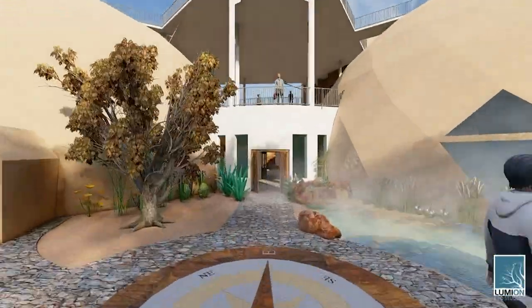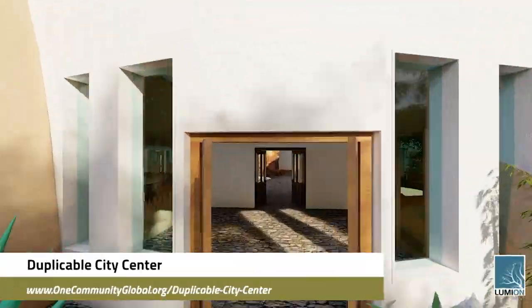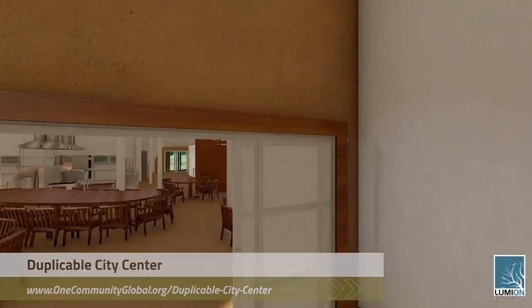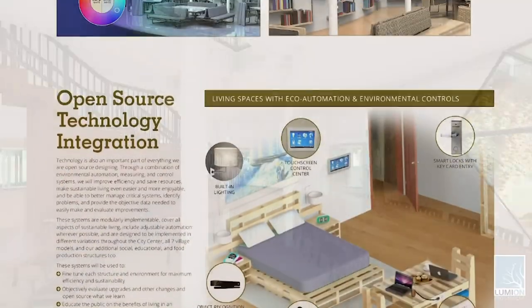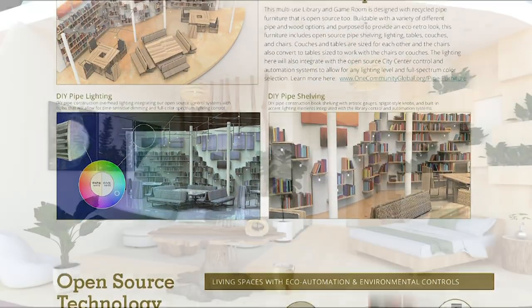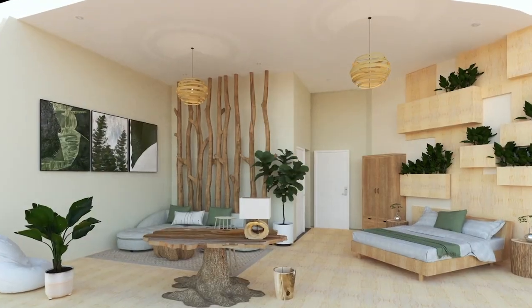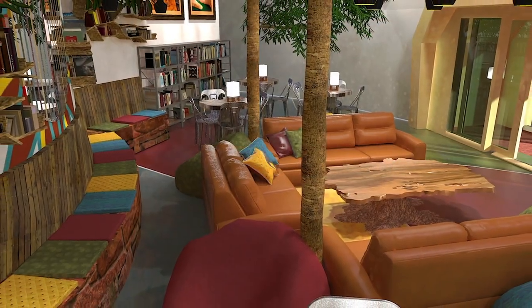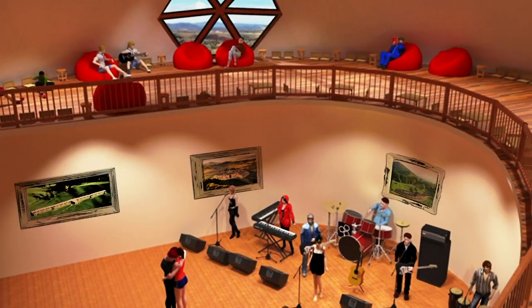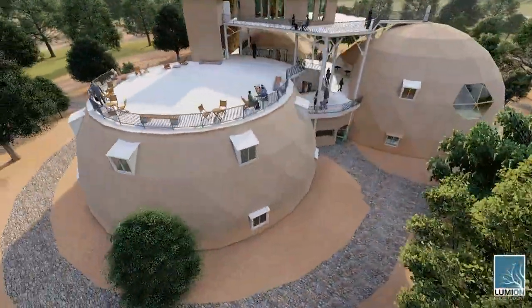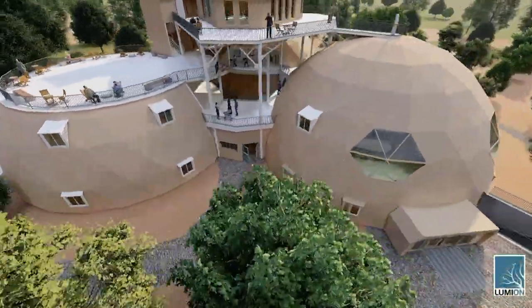One Community is also creating an open source duplicable city center. It is designed to be LEED Platinum certified, provide 12 guest rooms, dining for over 150 people, and laundry and recreation space for over 300 people — all while saving money, time, and space and resources.